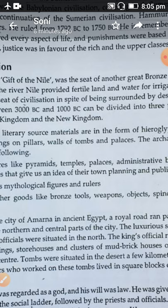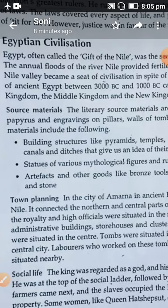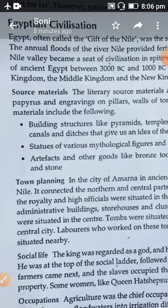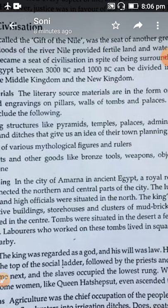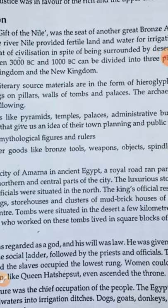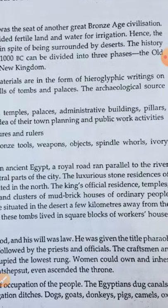The archaeological source materials include three points. First, building structures like pyramids, temples, palaces, administrative buildings, and pillars. Second, statues of various mythological figures and rulers. Third, artifacts — goods made by humans such as bronze tools, spindle whorls, ivory, and stone objects. These are the archaeological source materials of Egyptian civilization.